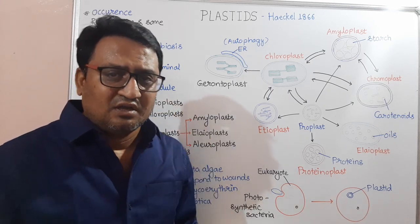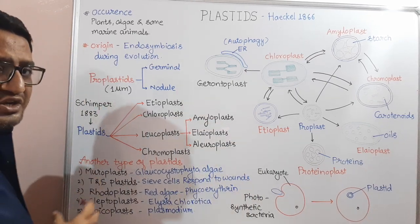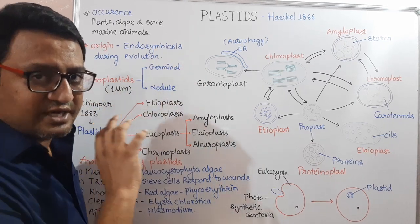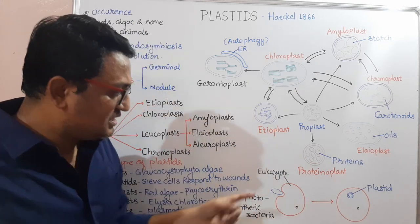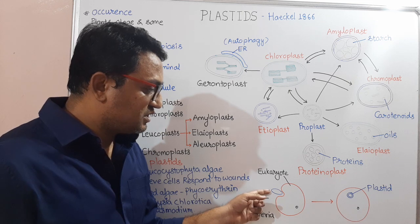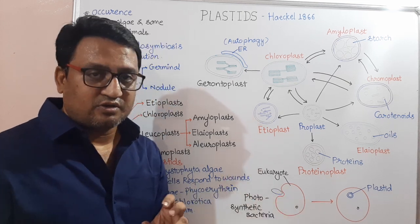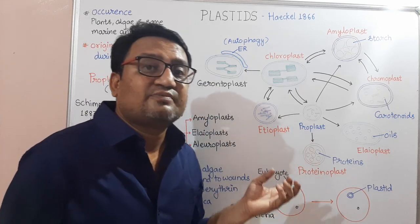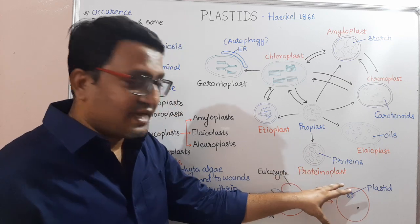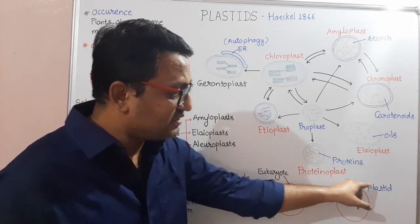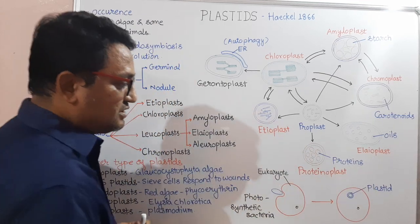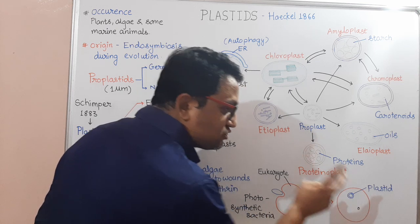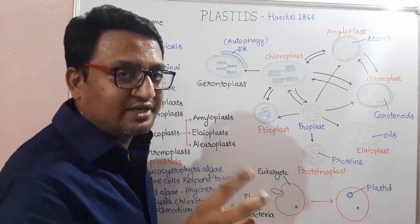Let us see the origin of Plastids. Billions of years ago, plastids originated in eukaryotic cells by the process called Endosymbiosis. Consider a photosynthetic bacteria which is engulfed by a eukaryote. After Endosymbiosis, instead of digesting that photosynthetic bacteria, the eukaryote kept it as is, and it got converted into a Plastid. The inner and outer membrane of this eukaryotic cell becomes the plasma membrane, making Plastid a double membranous structure containing DNA.